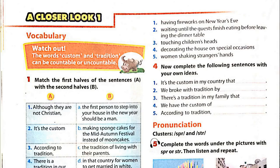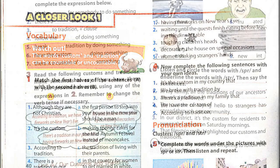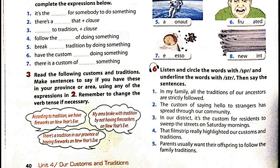Unit 4, Page 40: A Closer Look 1 — Pronunciation. Activity 6: Listen and circle the words with SPRU and underline the words with STRU. Then, say the sentences. 1. In my family, all the traditions of our ancestors are strictly followed.